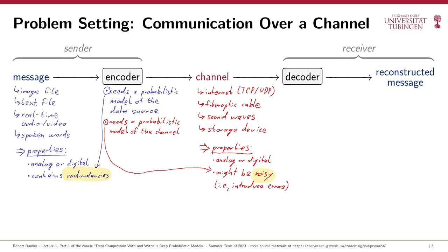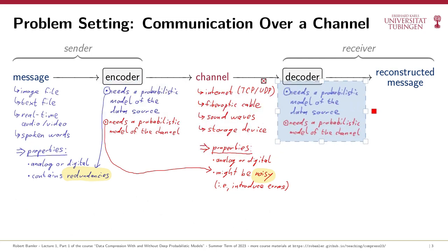So the encoder needs two probabilistic models: one of the data source and one of the communication channel. And since the decoder essentially inverts everything the encoder did, it too needs to have both of these probabilistic models. You should think of the models as being an integral part of the encoder and decoder, and they have to match between encoder and decoder precisely, otherwise the receiver might reconstruct a completely wrong message. Before sender and receiver can exchange any message, we assume they had some way of agreeing on the probabilistic models to use and on the algorithms that turn these models into coders.